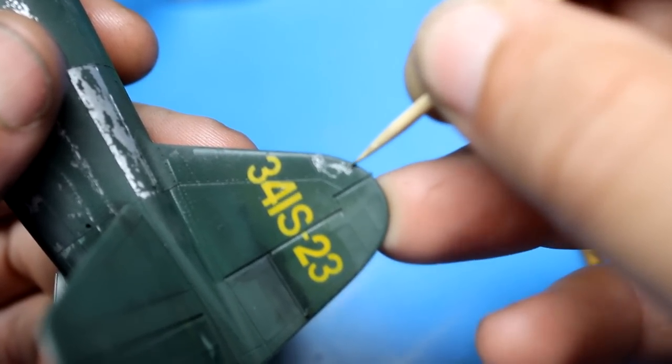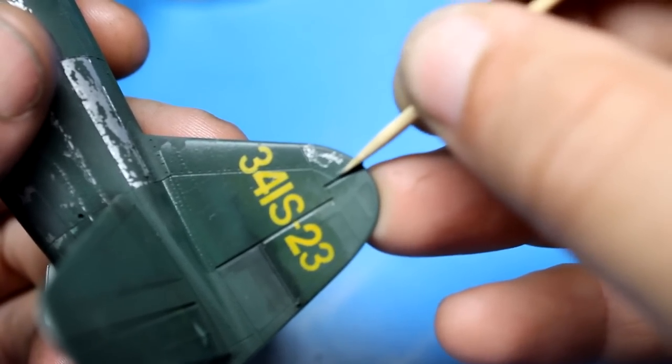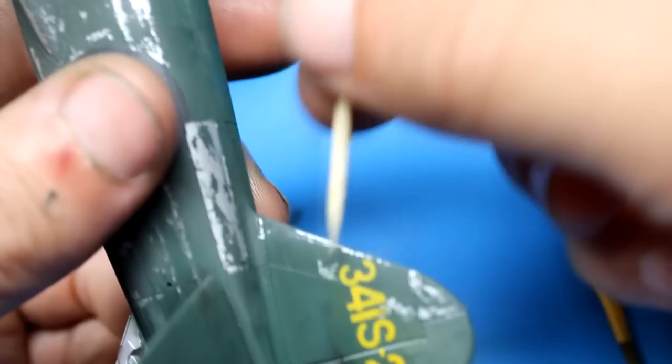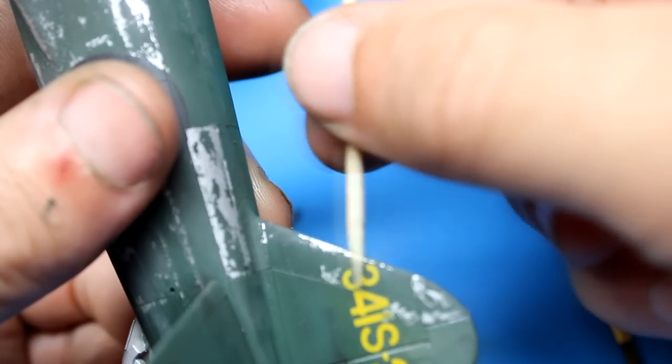For the tail number on the aircraft, Woody put together a stencil in Fusion, and then sent that over to me as a file to cut on my silhouette machine.